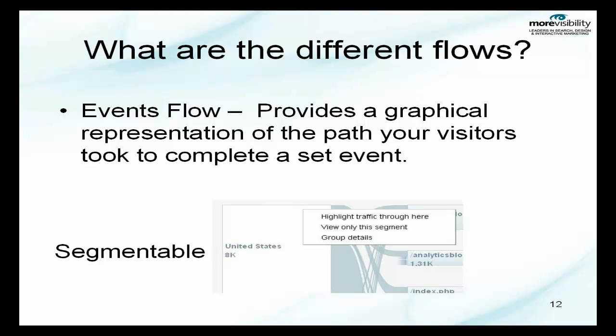With your event flow, it shows the path your users took to complete your event — such as watching a video, downloading a PDF, or signing up for a newsletter. Whatever event you have coded on your site, this is how they would get to that event. If you see that it's taking five, six, or seven interactions — or even three — to download an important PDF or watch an important video, maybe you'd like to move that event to a page closer to or even on the home page. You can segment each portion of the flow. Once you click on the bands, you'll get highlight traffic, view only this segment, and you can also group your details.